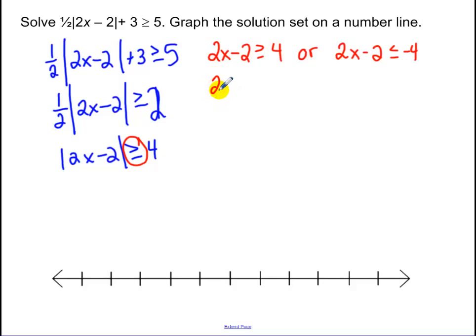Now, it's just a matter of solving. 2x minus 2 greater than or equal to 4. Let's add 2 to both sides and divide by 2.